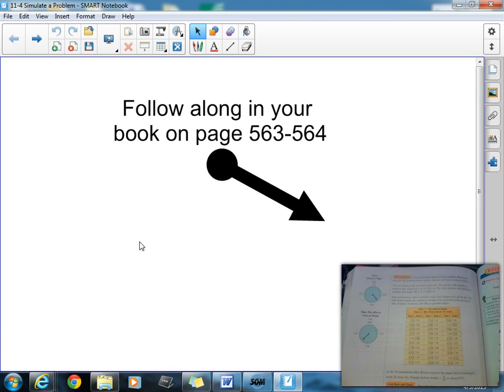So the very top, plan and solve. Now, we can't collect data from Sue and Mrs. Rivers because, first of all, they don't exist. We can't walk up, talk to them, and say, all right, so when did you get there this day? No, we can't do that. So we're going to simulate the problem with a model. Now, what they did is they actually used two spinners. You see these two spinners right here.